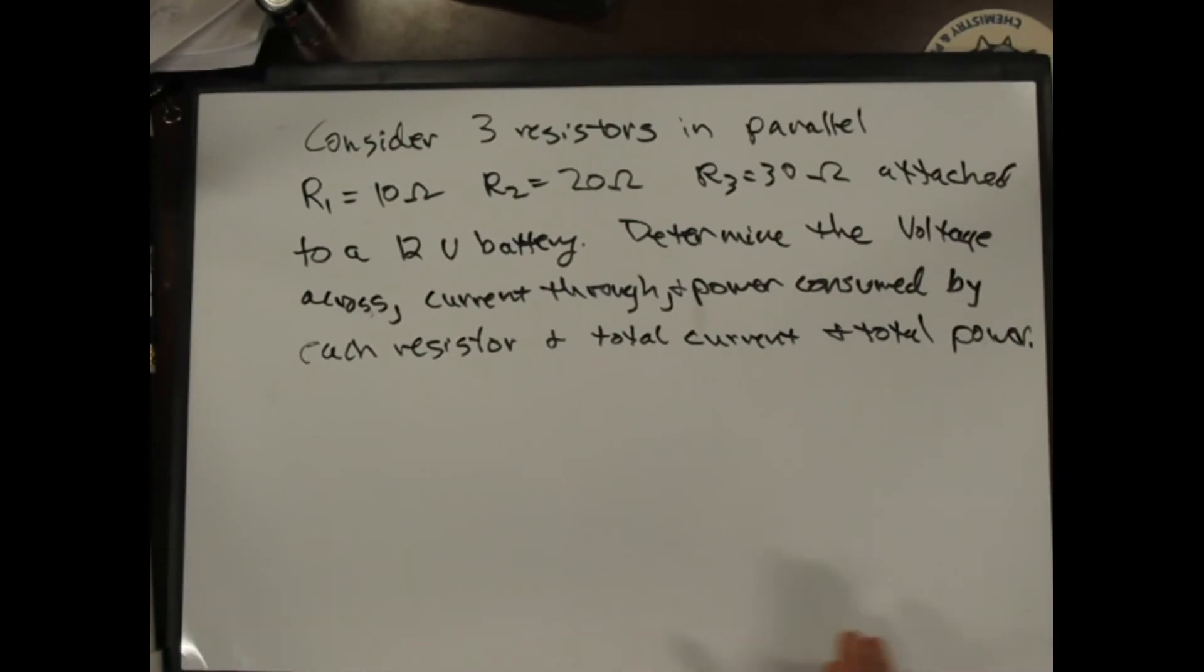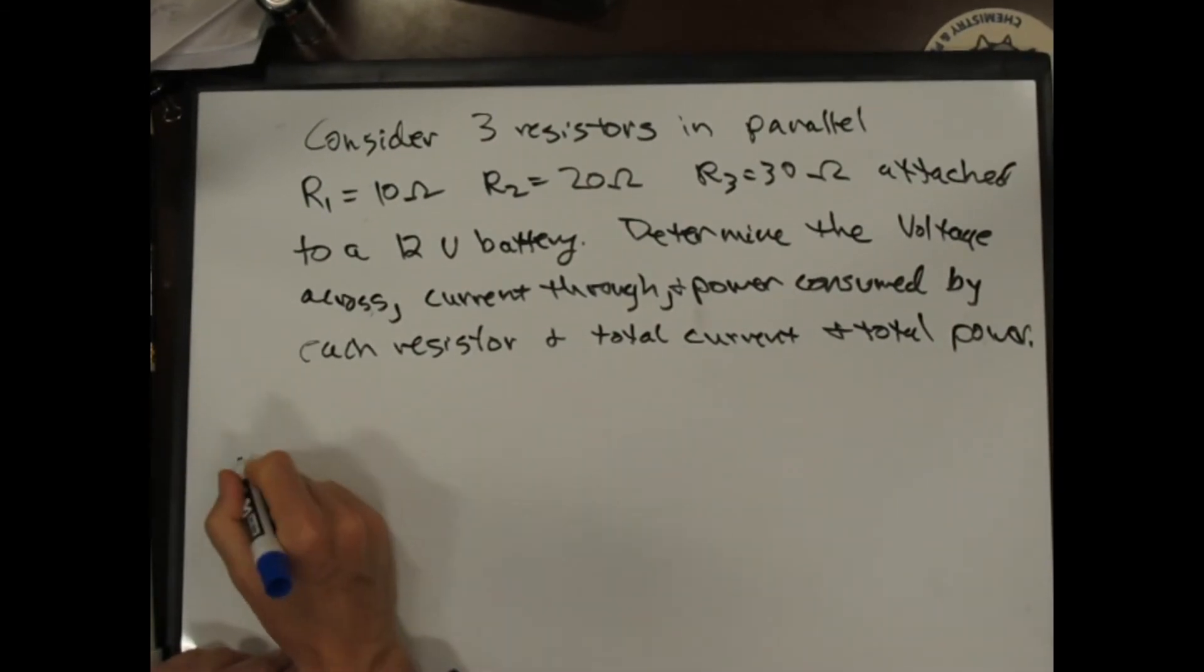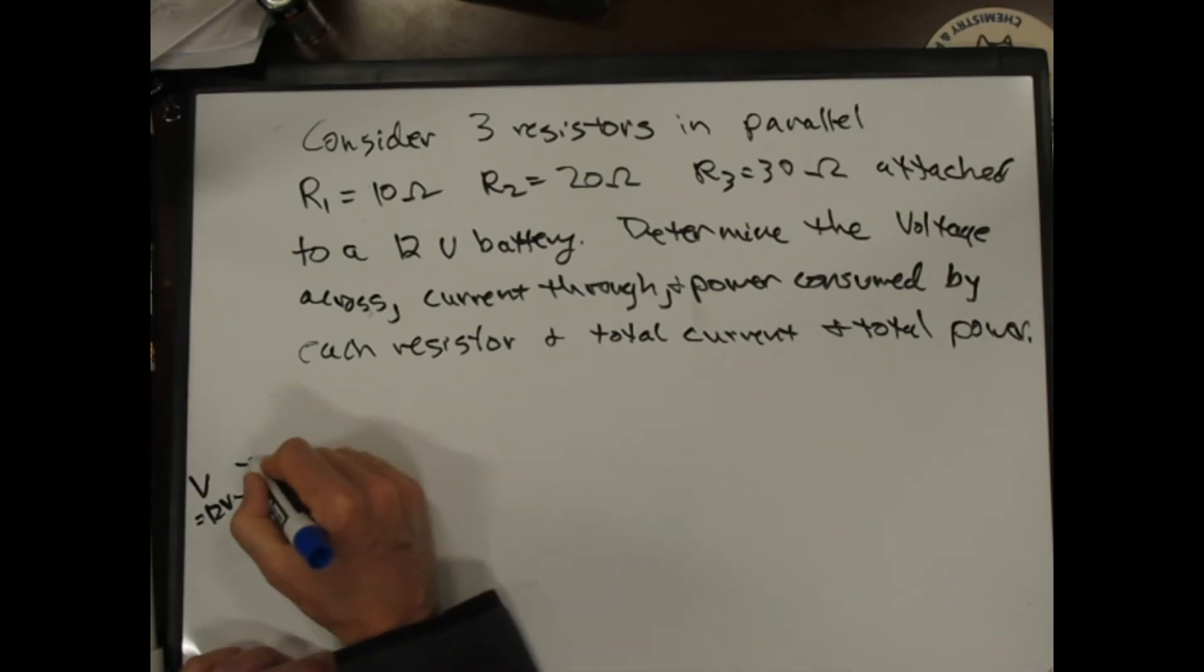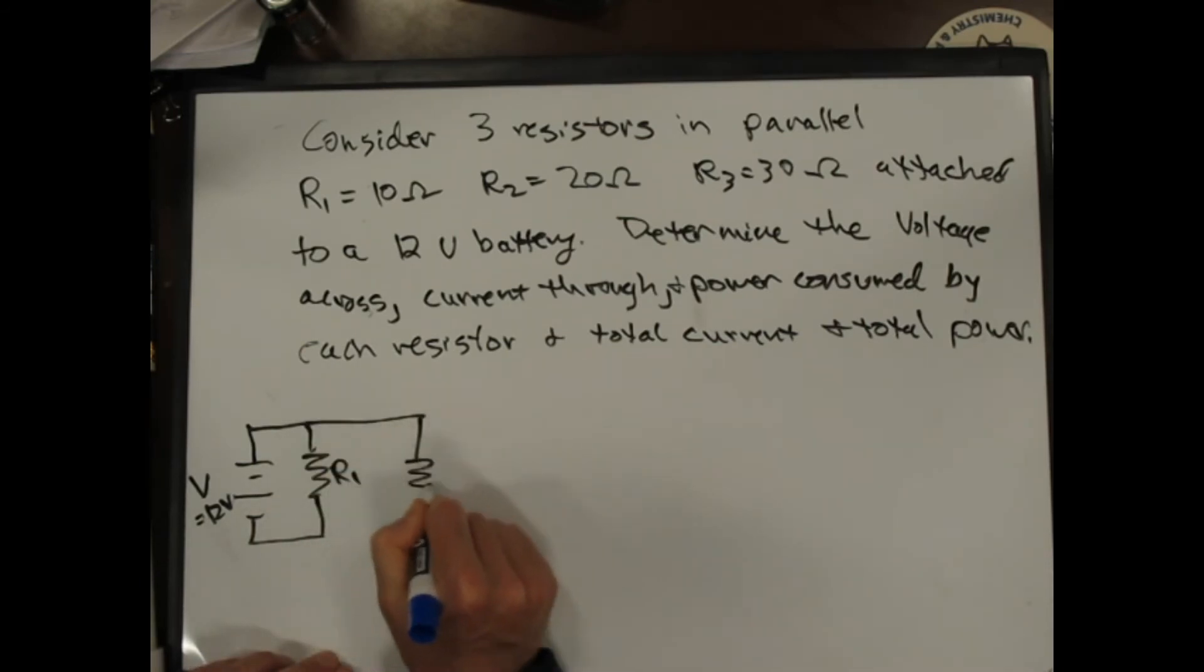Here's a parallel resistors example. We're going to have three resistors in parallel. This is V, which is 12 volts. I'm going to have a resistor here. That's R1. I'm going to have a resistor here. That's R2. I'm going to have a resistor here. That's R3.